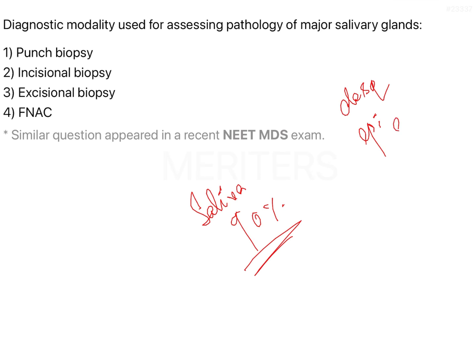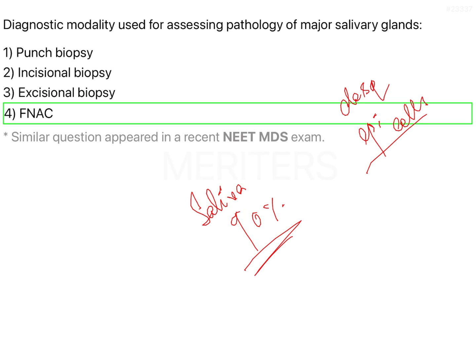When the glands secrete the saliva, some amount of desquamated epithelial cells are actually secreted from the glands to the outer exterior. Now, amongst the four options given, usually when you have a salivary gland pathology — and even for your thyroid glands — the first and most important diagnostic method is actually FNAC.